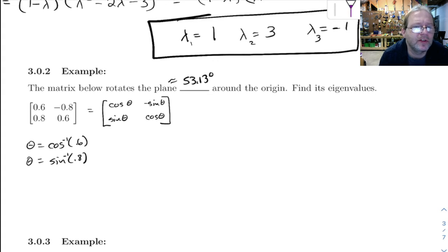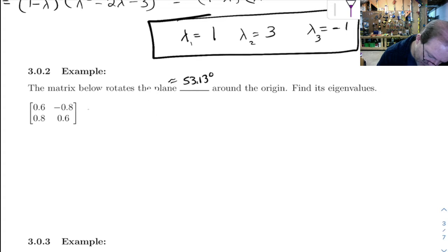So this thing is going to rotate the plane around the origin. We're supposed to find its eigenvalues. Let's go ahead and do that. I'm going to erase this bit. Something interesting is going to happen with the eigenvalues, and after that happens I want to go back and think about this rotation.